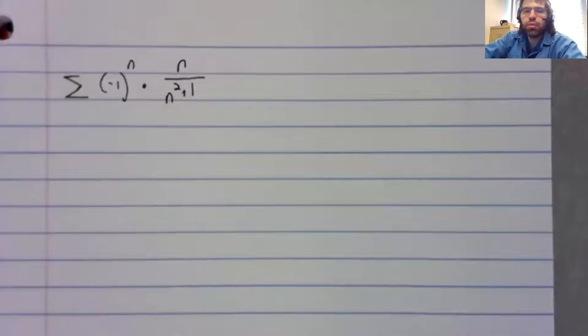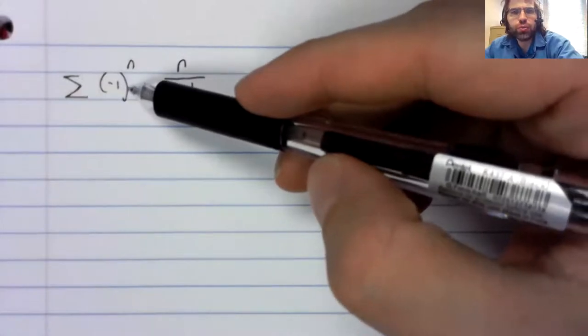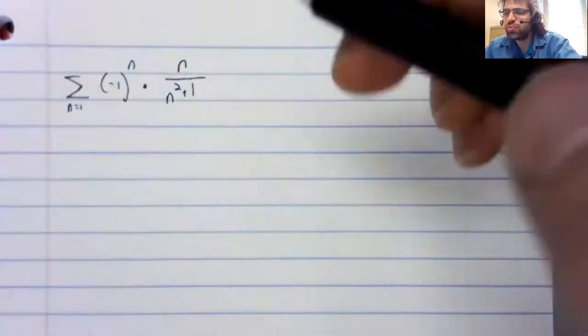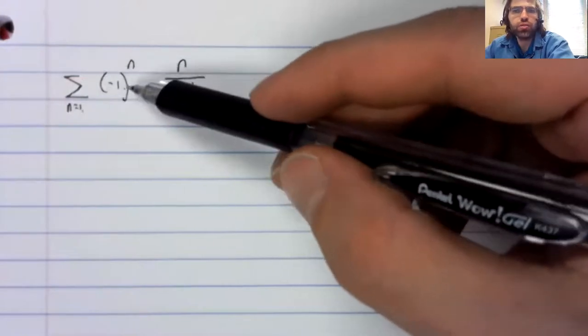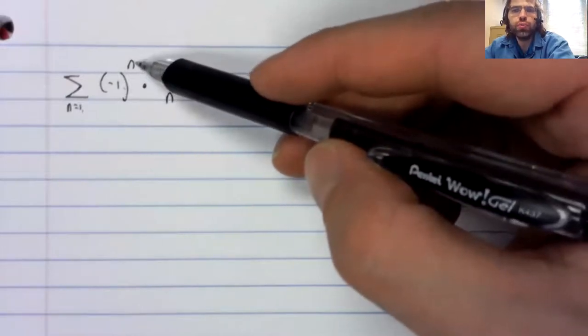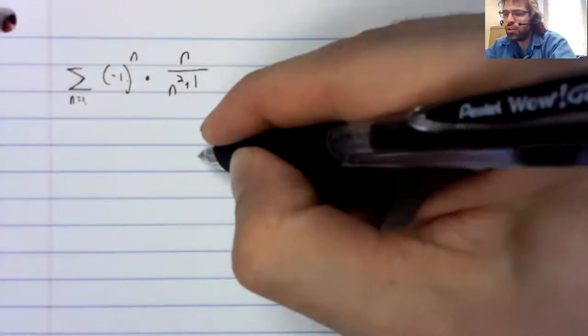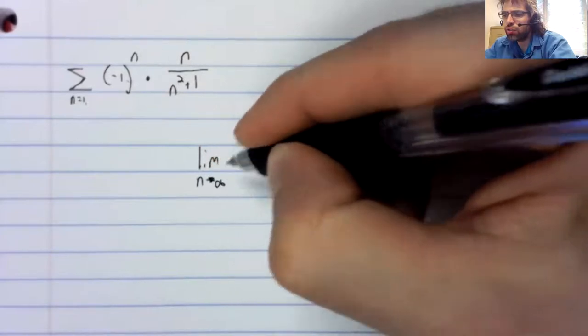For number 12, this negative one to the n is going to make the series alternate. If we start, where are we starting? We're starting at one. This will give us a negative sign. Negative one squared will be positive. Negative one cubed will be negative, and so on. So this is an alternating series.